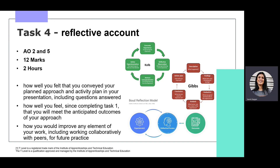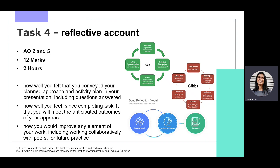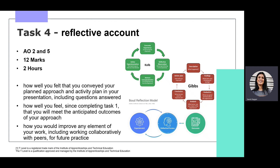There are 12 marks in total for Task 4. Students will gain higher marks when they show analytical and evaluative skills in their reflective account, particularly when they identify improvements to their own knowledge, planning skills, and future practice. If evaluations are basic or very descriptive statements, or do not include reference to improvement, this will limit the marks awarded for this task.